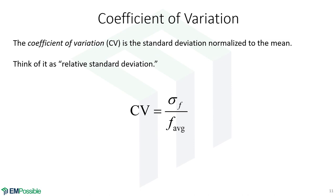Then we have the coefficient of variation. This really is the standard deviation, but it's normalized to the average. So we can kind of think of it as a relative standard deviation.